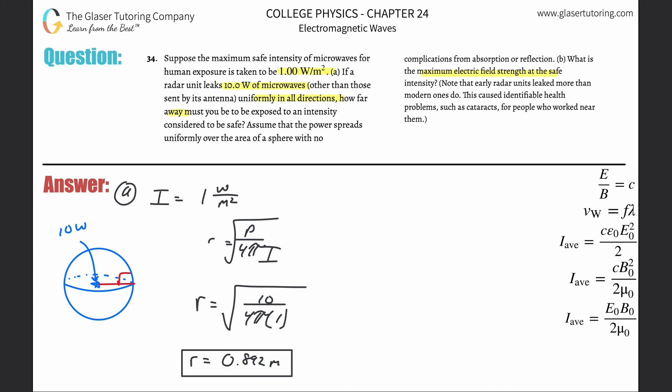We have to relate now intensity to maximum electric field strength. We have the formula over here that the intensity will be equal to the speed of light times the permittivity of free space multiplied by the maximum electric field strength squared, all then divided by two.